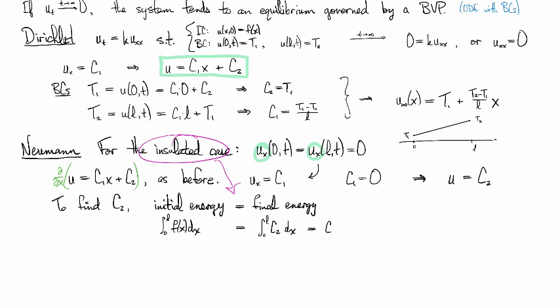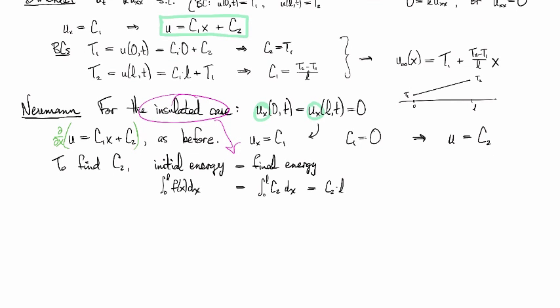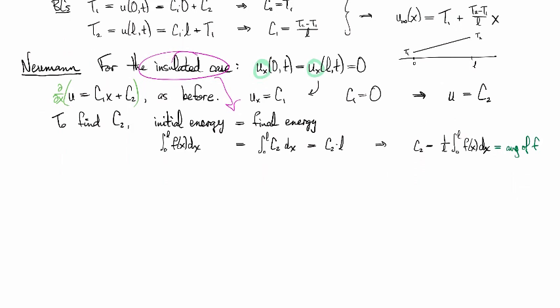On the right-hand side, this evaluates to c2 times l. That tells you, dividing the l across, that c2 is 1 over l times the integral from zero to l of f(x) dx. You remember that the interpretation of this guy is the average of f on that interval.